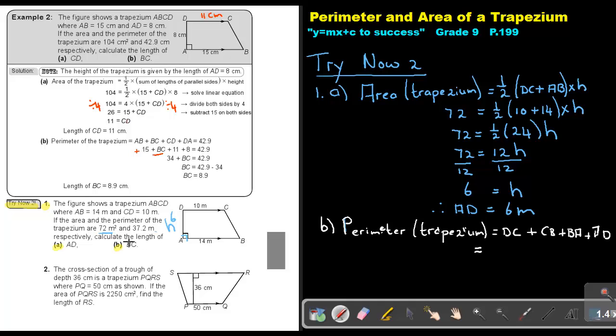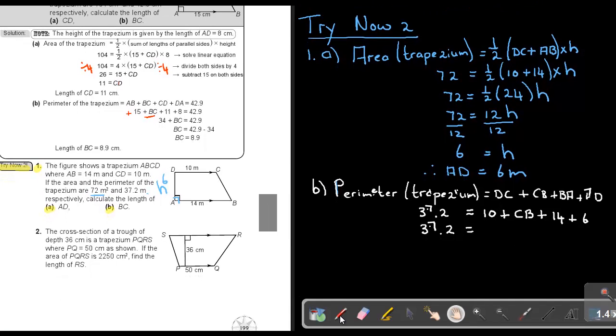So, the perimeter, what is the perimeter? 37.2. What is DC? DC is 10. What is CB? CB I don't have. What is BA? 14. And what is AD? 6. So, I have 37.2. Now, I'm just going to add this up. And if I add that up all, I'm going to 10 plus this plus this is going to give me 30 plus BC or CB. It doesn't matter.